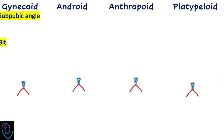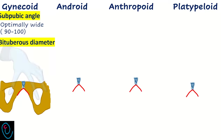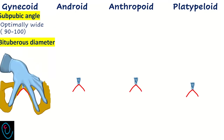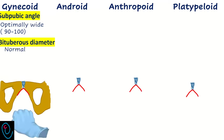Regarding pelvic outlet, in gynecoid pelvis the sub-pubic angle is wide, about 90 to 100 degrees, roughly corresponding to the fully abducted thumb and index finger. The bituberous diameter is normal — it can accommodate four knuckles. These features enable easy delivery at the level of the pelvic outlet.